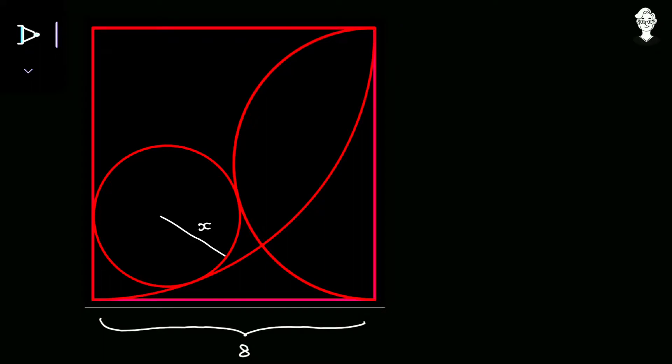Today we have an interesting geometrical question. I'm thinking to call it a 'family of a circle' enclosed inside a square of side length 8. There is a complete circle, a semicircle, and a quarter circle — all three are parts of a circle, like a family, and they are all together inside the square.